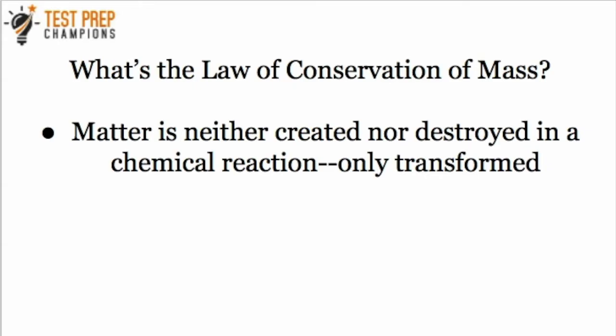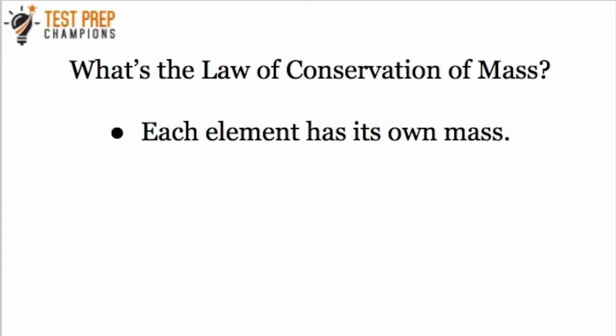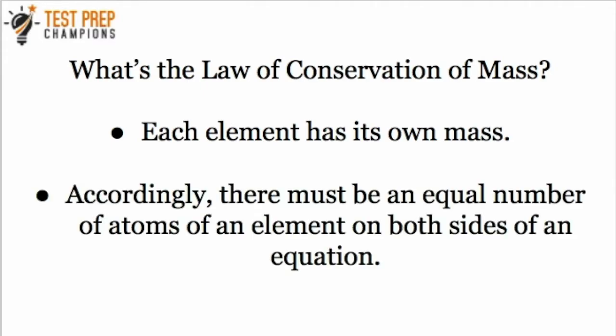Next, we need to talk about the law of conservation of mass. Matter is neither created nor destroyed in a chemical reaction — it's only transformed. Therefore, the mass of the products must always equal the mass of the reactants. Each element has its own mass, and accordingly there must be an equal number of atoms of an element on both sides of an equation. This will make more sense as we get into some balancing examples.